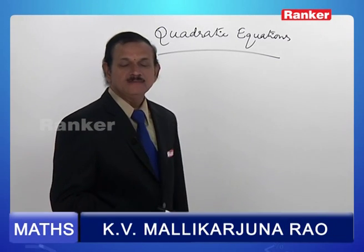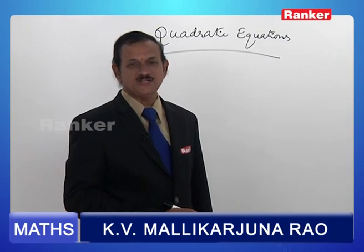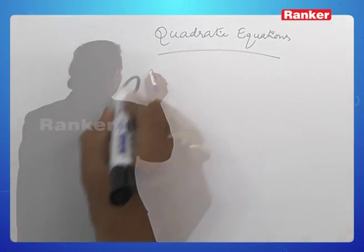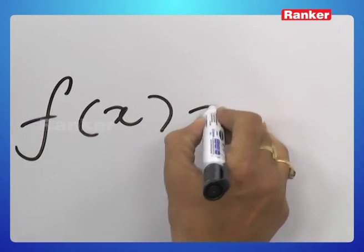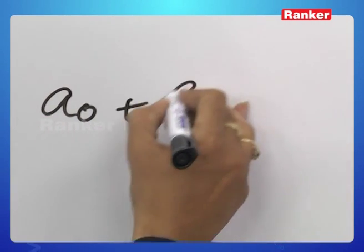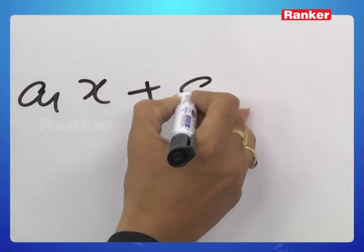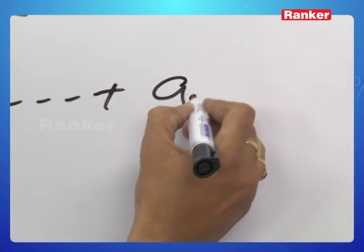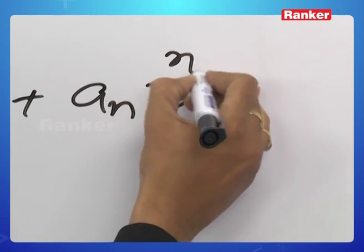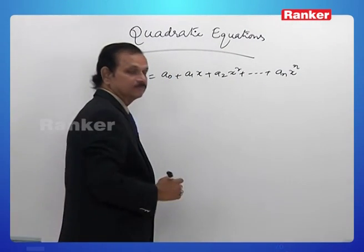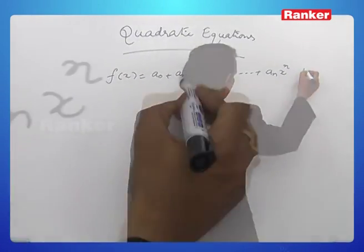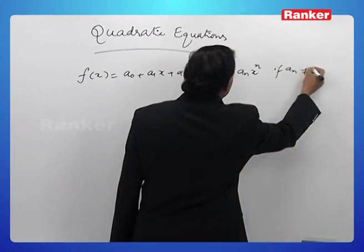Before going to deal with that, let us recall the definition of a polynomial. We know that f(x) is equal to a0 plus a1x plus a2x² and so on, anx^n is a polynomial of degree n provided an is not equal to 0.